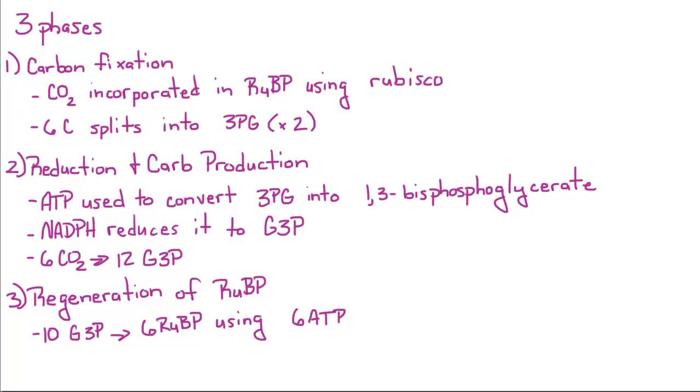The second step is the reduction and carbohydrate production, where ATP is used to convert 3-phosphoglycerate into 1,3-bisphosphoglycerate.